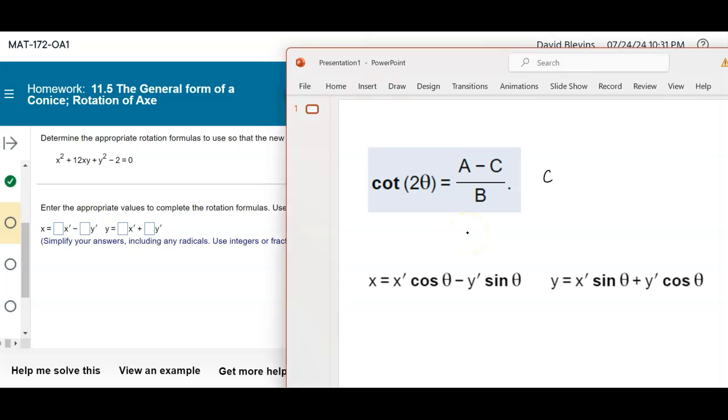So we end up with the cotangent of twice the rotation angle that we're after. It needs to satisfy this equation where a, again which is the number in front of x squared, which is 1, minus c, the number in front of y squared, which is also 1, divided by 2 times b, which is 12, will give us our angle. Now 1 minus 1 is 0, so it doesn't matter if the bottom is 24, we're going to get 0 here. So the cotangent of 2 theta is equal to 0.